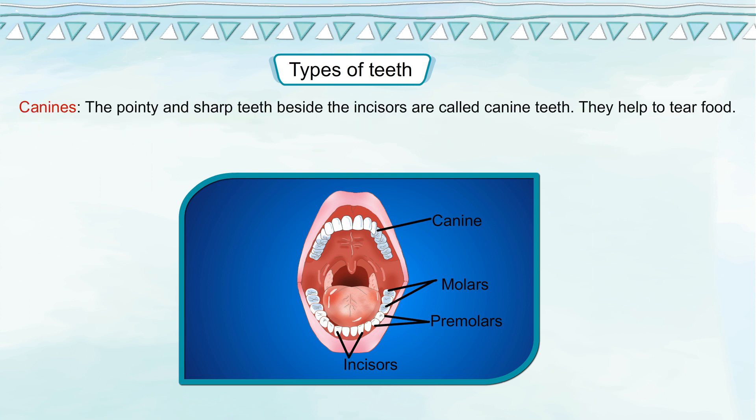The pointy and sharp teeth beside the incisors are called canine teeth. They help to tear food. We have 4 canines, 2 in each jaw.